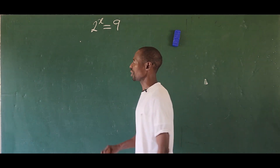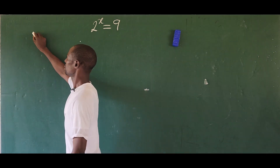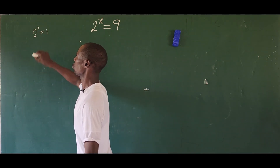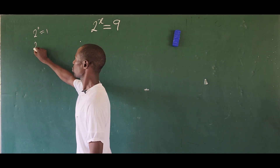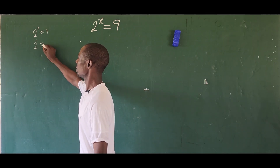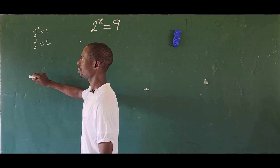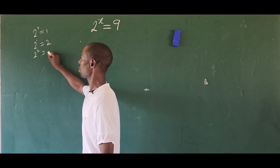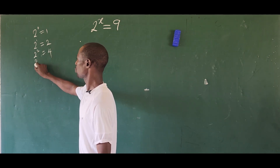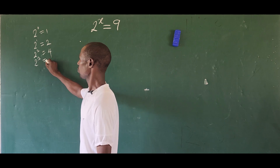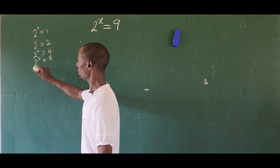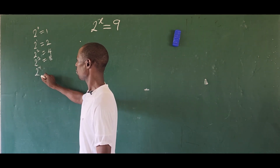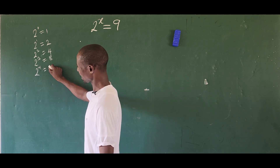We know that two to the power of zero is equal to one, two to the power of one is equal to two, two to the power of two gives us four, and two to the power of three gives us eight.